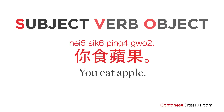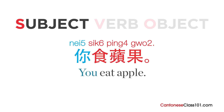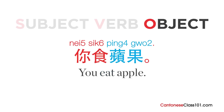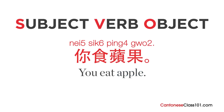We start with the subject 你, meaning 'you'. Then the verb 食, meaning 'eat'. And finally the object 蘋果, apple. That's how we form basic sentences in Cantonese. That's really simple. What about negative sentences? Forming negative sentences in Cantonese is even easier — let's find out how.